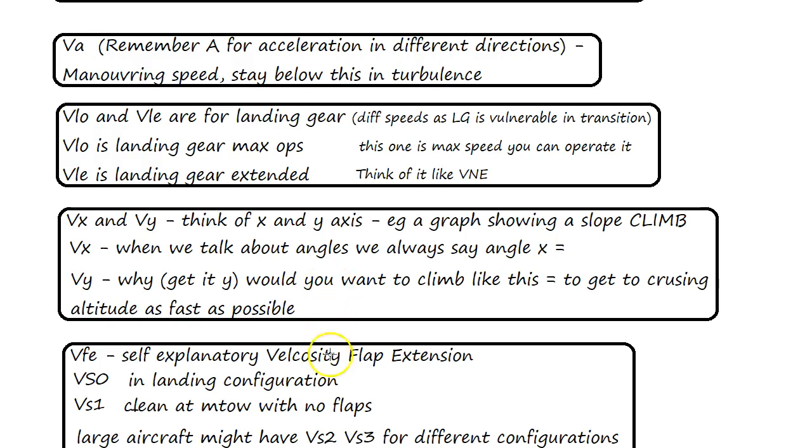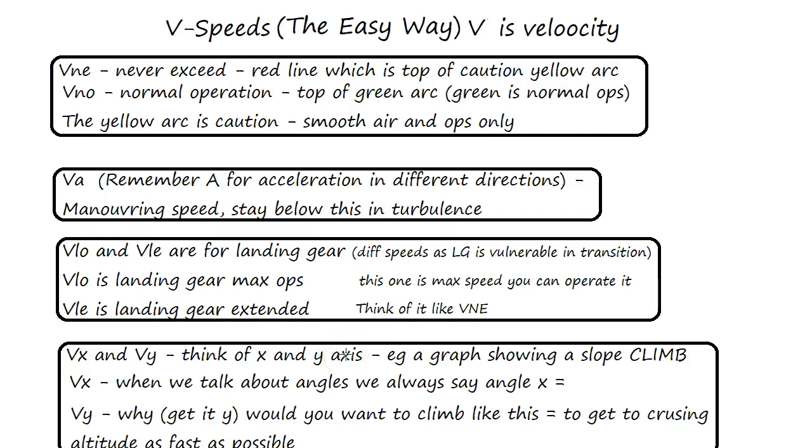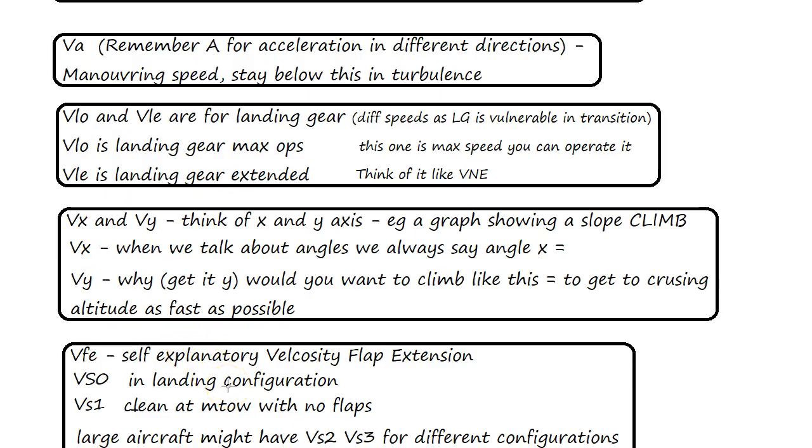Let me just race through them again to reinforce. VNE never exceed, self-explanatory. VNO normal operations - self-explanatory, as long as you remember it can only be one speed and not a whole arc. VA acceleration - just remember to change directions you have to accelerate in a certain direction. VLs are all to do with landing. O means ops. E means the same as VNE, the same as VFE - never exceed, never exceed, never exceed. VX and VY: X, when we talk about angles, we always talk about X. So X is climb angle. Y, why would you want to climb? VFE, self-explanatory, flap extension - the same as VNE, the same as VLE. And then when you get your VSO and your VS1, just remember the flap speeds are all messed up. It's illogical and it's in the wrong order. And then you'll swap those two around. If you do that, you'll remember it all. So good luck. Thanks for listening. Matt from Pilot Practice Exams, where you can pass in half the time.